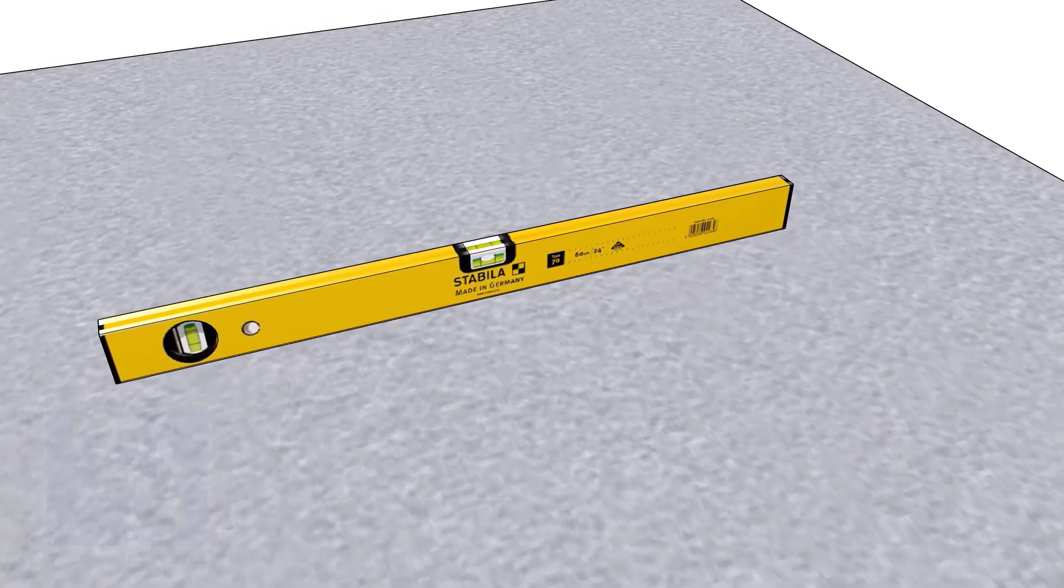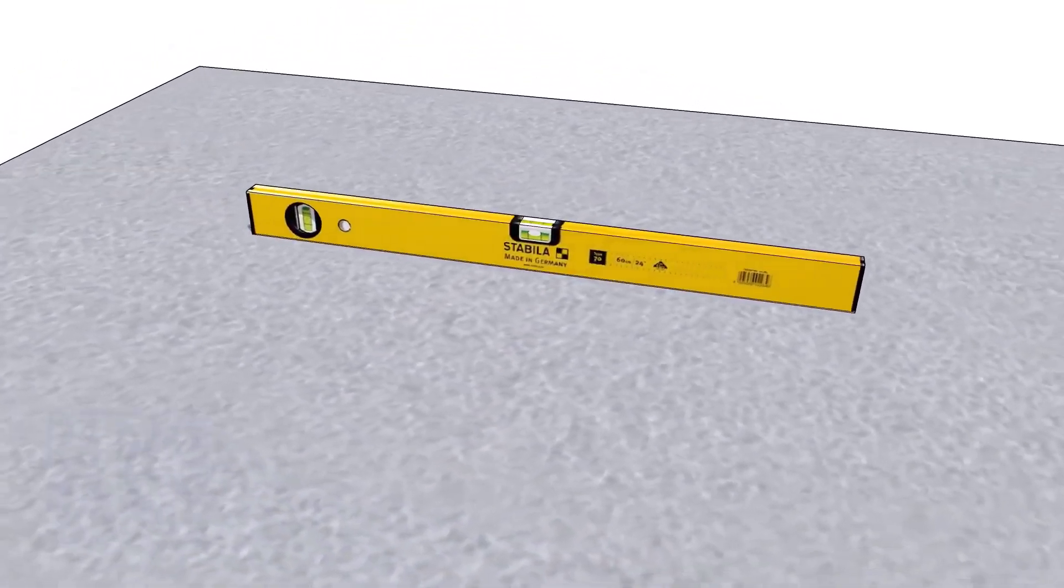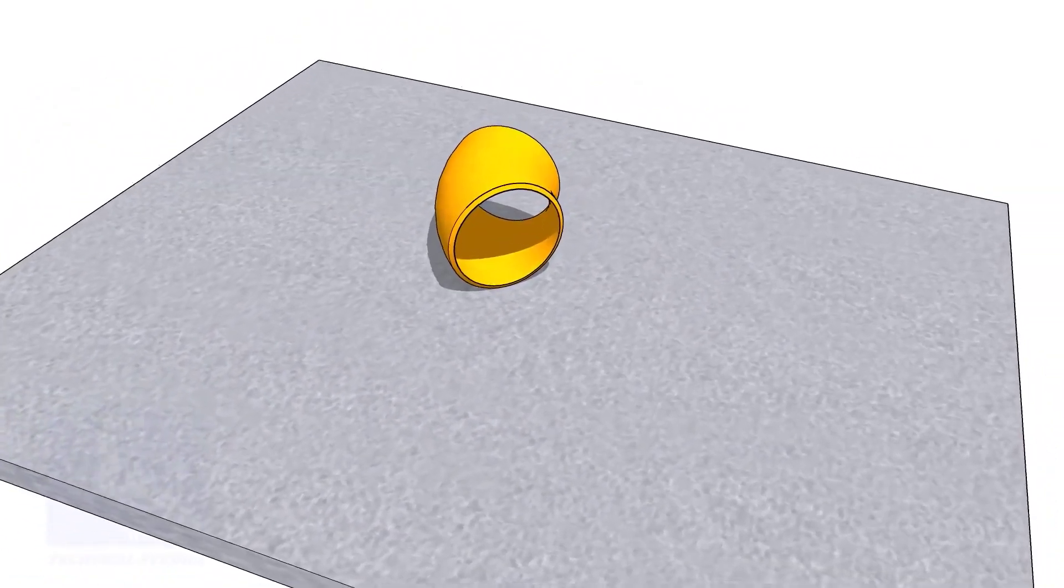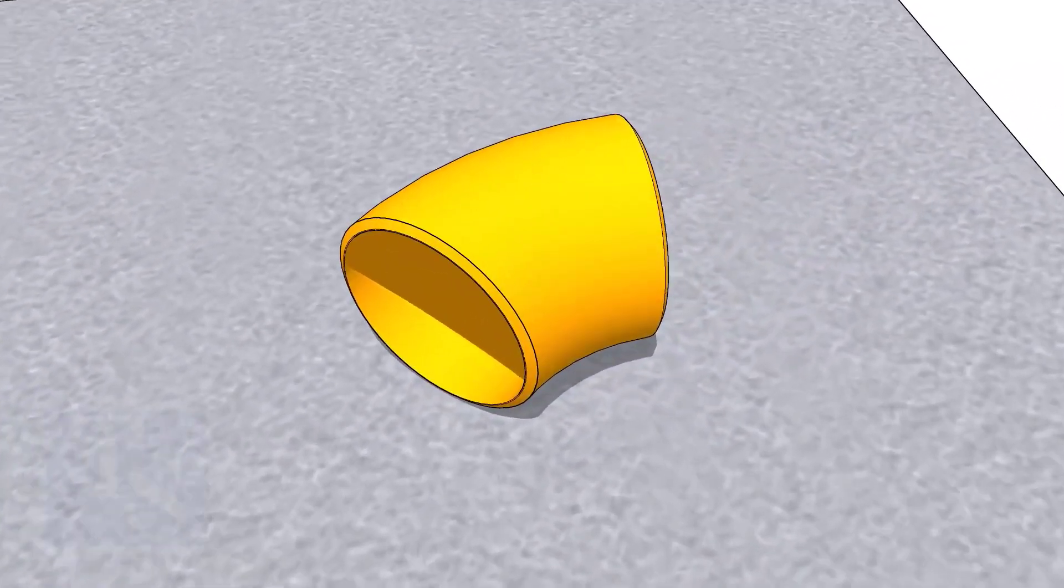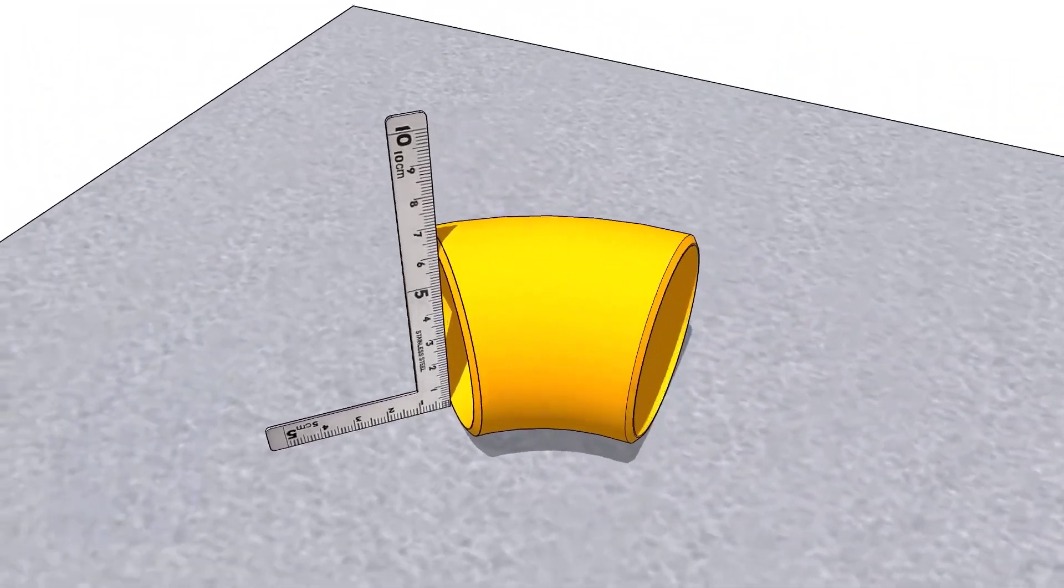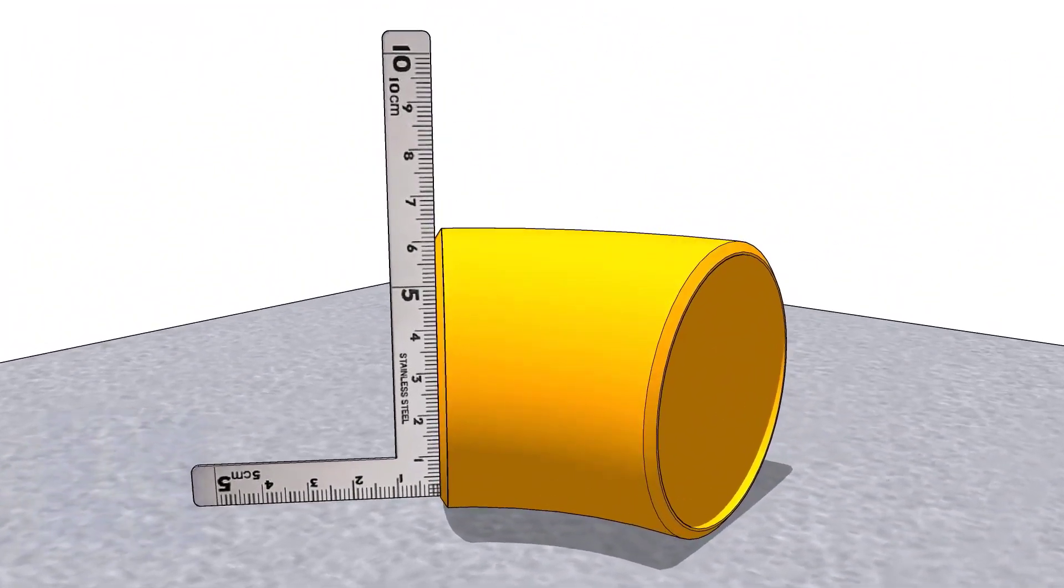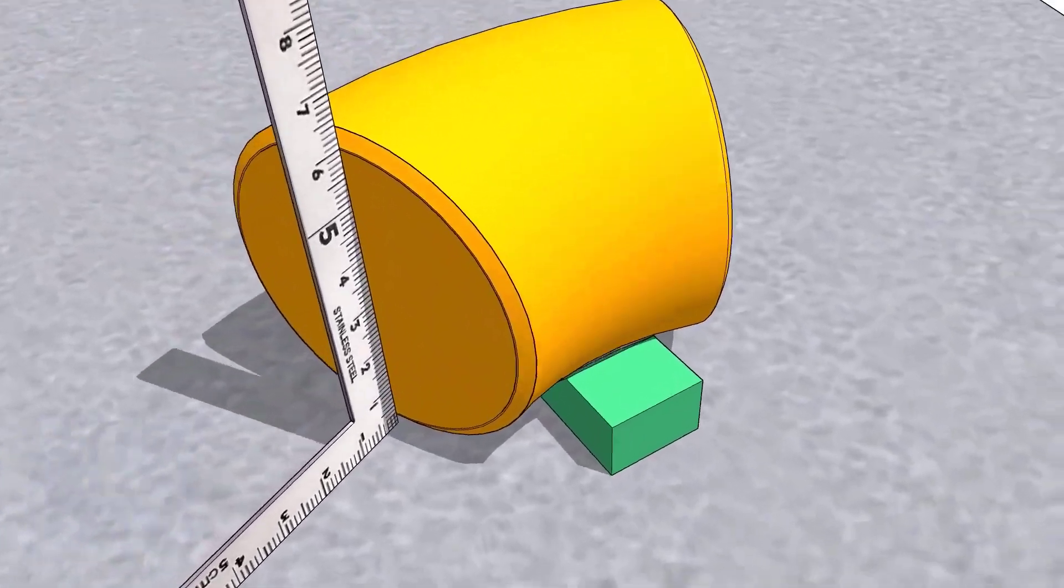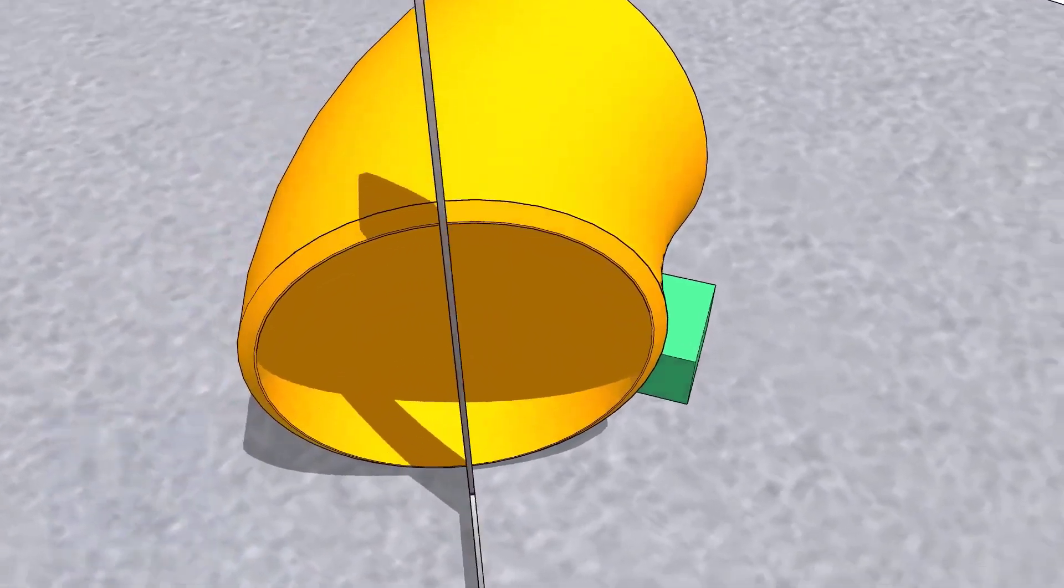Now I will show you how to mark the center line of a 45 degree elbow. Put the elbow on a straight plate. Rotate the elbow until the face of the elbow is exactly square to the plate.